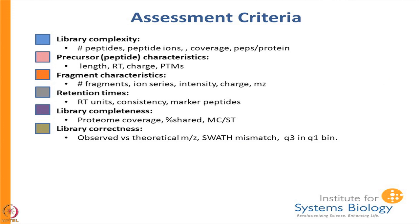These are the different QC criteria. Library complexity is how big the library is — how many peptides, how many peptide ions. There is precursor information: the average length of peptides in the library, how many modifications there are, what kind of modifications. Fragment characteristics include what ions you have — B or Y — and how many fragments per peptide.